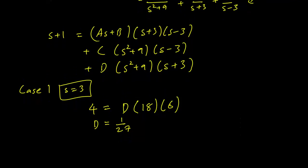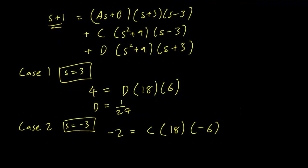And now the second case is just s equals minus 3. And we have every term cancelling on the right-hand side. On the left-hand side, we have minus 2 because s plus 1. Minus 2 equals, everything cancels except the C term. This would be C times 18 times minus 6. And this gets us C equals 1 over 54.